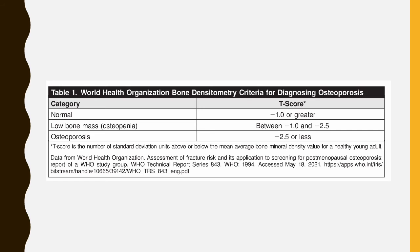On this slide, you'll see a table by the World Health Organization that has the criteria for diagnosing osteoporosis. A T-score on a DEXA scan of minus 1.0 or greater means normal bone mineral density. A score between minus 1.0 and minus 2.5 is low bone mass, consistent with osteopenia. And minus 2.5 or less is consistent with osteoporosis. We will talk later about other ways of diagnosing osteoporosis and other factors that can go into making that diagnosis.